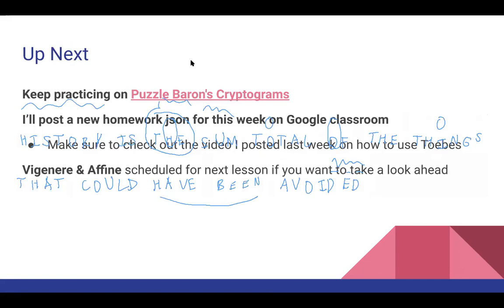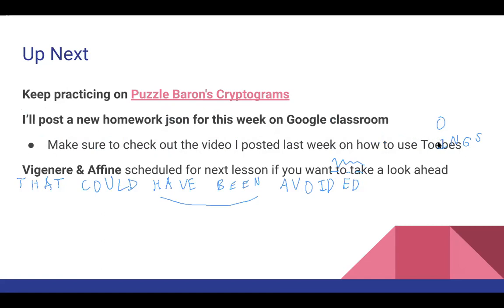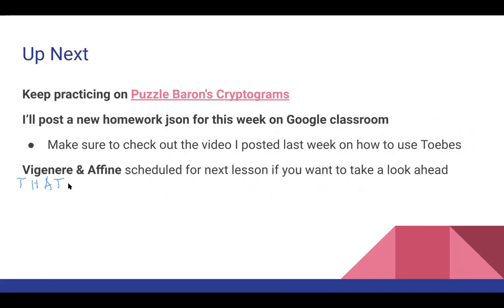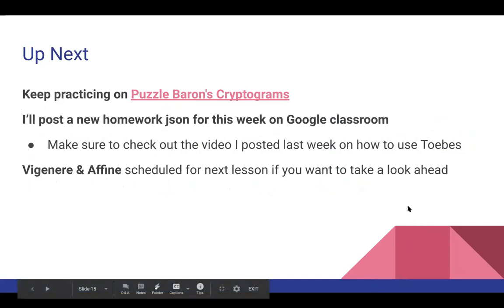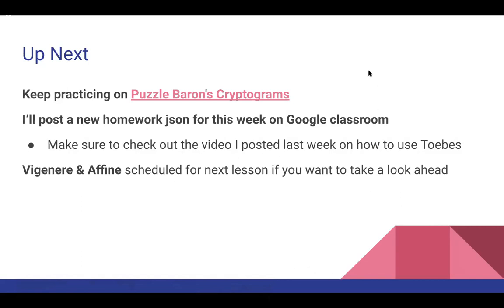The homework this week is similar in length — you don't have to do all of it. You can log in to do the test online (easiest method, check the recording for how), save as PDF, or print it. The homework JSON I'll upload to Google Classroom will have mostly Caesar and Atbash problems, with a couple of review aristocrats. Next class is Vigenère and Affine. For now, let's hop on cryptograms.org for some practice.